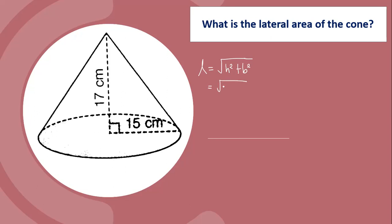Height squared is equal to 17 squared plus the base radius squared is 15 squared. 17 times 17 equals 289 plus 15 times 15 equals 225. Add the two to equal 514. So square root of 514.